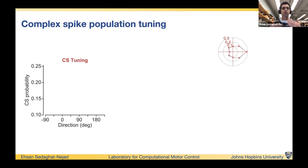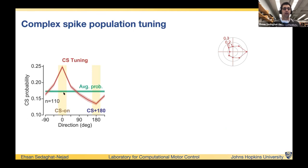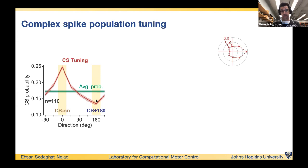Using this framework, let's look at the population of Purkinje cells. For each cell we detect the direction with the maximum probability of firing a complex spike — we call that the CS-on direction. By definition, the direction opposite to CS-on always shows a reduction below the average complex spike firing rate — we call that CS-off, or CS-180. Aligning cells to CS-on, we consistently obtain a CS-off direction with lower-than-average complex spike firing.